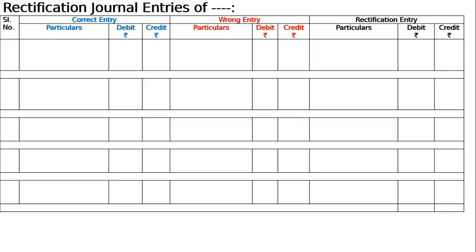Second part: pass the rectifying journal entries. Part A — a credit sale of goods for Rs. 2500 to Krishna has been wrongly passed through the purchases book. The correct entry is Krishna debited to sales account, 2500.